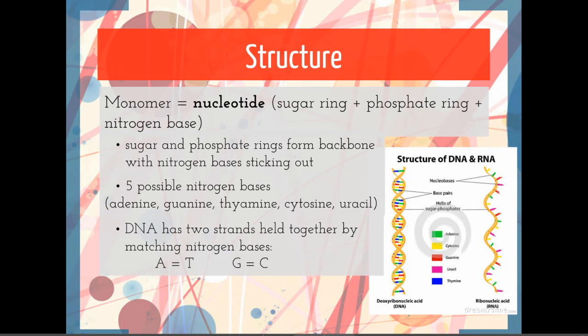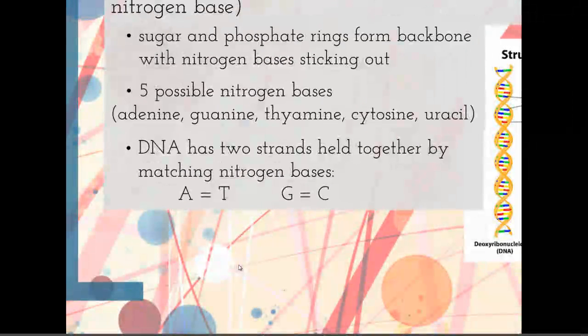DNA has two strands of these nucleotides held together by matching nitrogen bases. You've got a long chain of sugar phosphates with A's, T's, C's, and G's hanging out, and then their matching base pair will hold them to another strand. A always bonds with T, G always bonds to C.